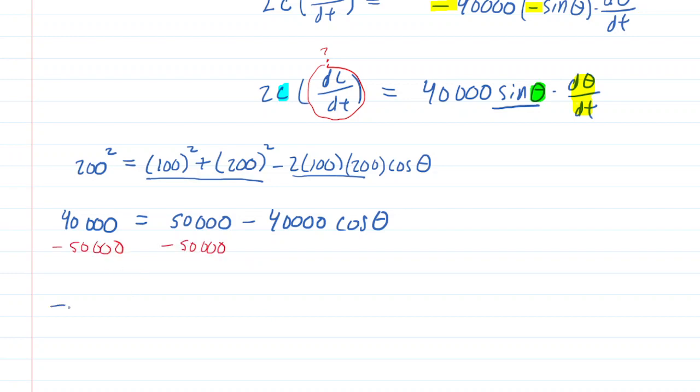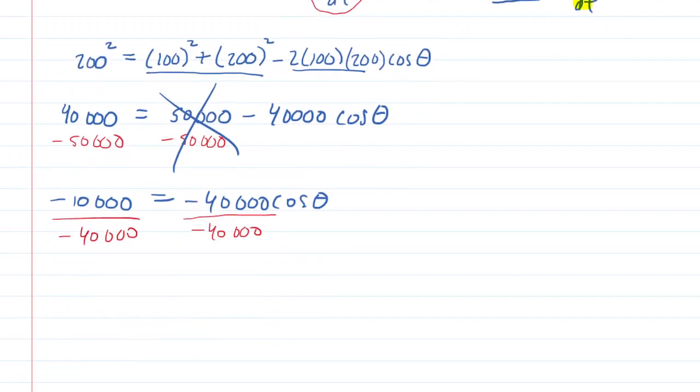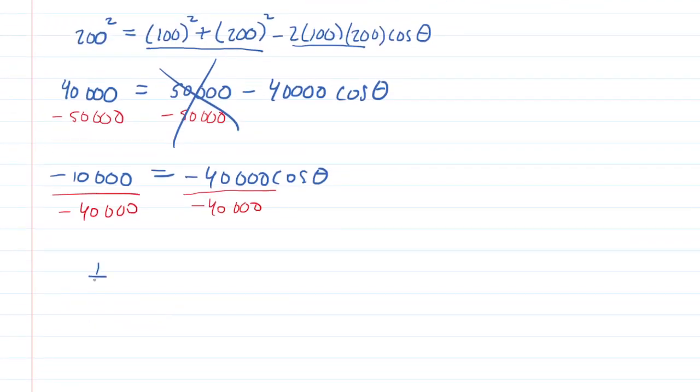On the right side, we can cancel this out. And then we're going to divide both sides by negative 40,000. And when we simplify, we can see that one-fourth is equal to the cosine of theta.